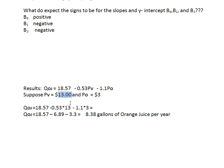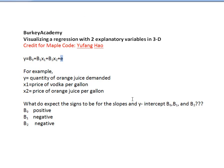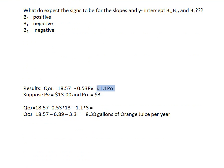Suppose we went into a store and saw that vodka is $13 and orange juice is $3. Plugging those values in gives us 18.57 minus 0.689 minus 3.3, which equals about 8.38 gallons of orange juice as our prediction. Of course this is just an average expectation — for any given city we're going to be off a little higher or a little lower, and that's where the error term e comes in: actual observations will be either a little higher or lower than what this plane predicts.